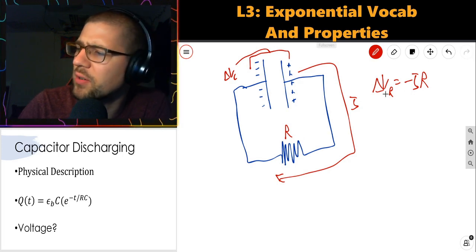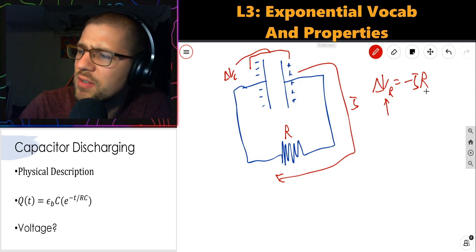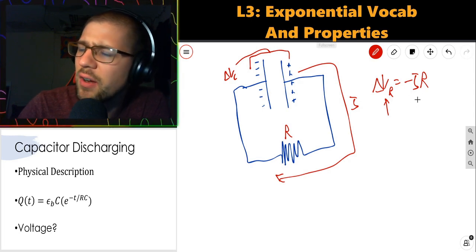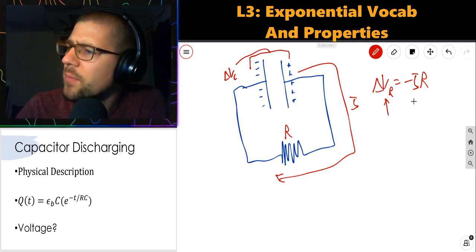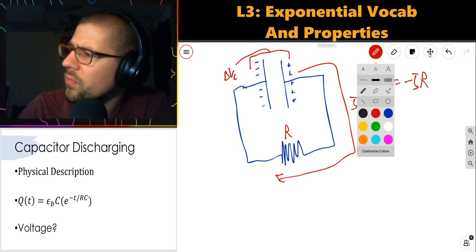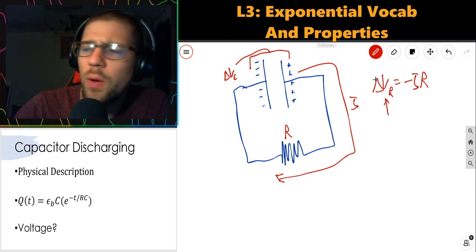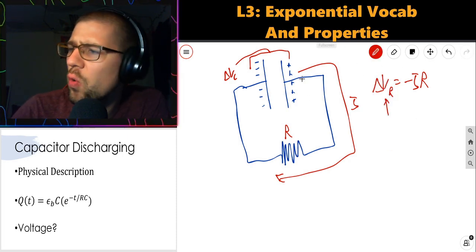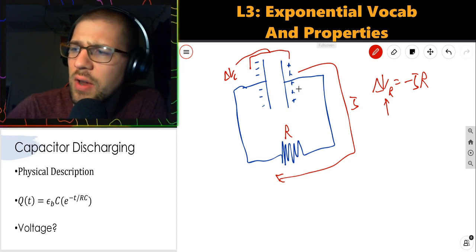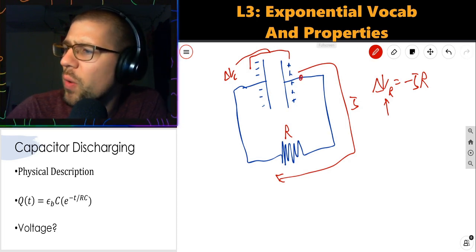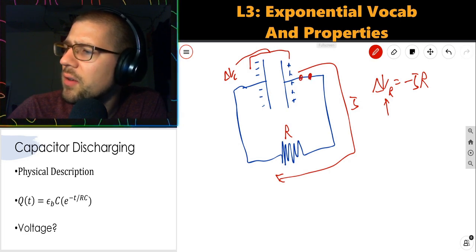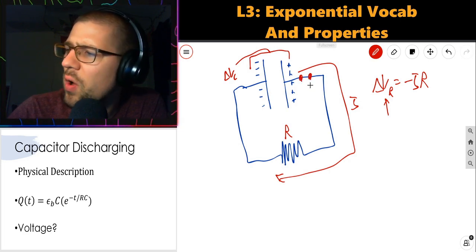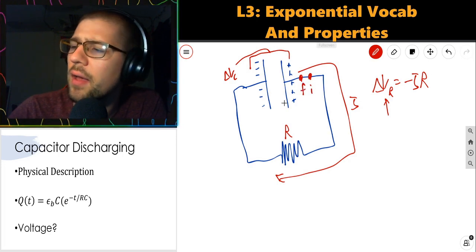As it does this, the charges have to dissipate energy in the resistor. The change in voltage across the resistor is governed by Ohm's law: ΔV across the resistor is −IR. The voltage supplied by the capacitor initially dictates the current through the resistor. A larger resistor at a particular voltage will slow down that current. Let me show the differential equation that describes this circuit by drawing a loop and applying Kirchhoff's voltage law.